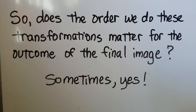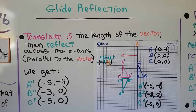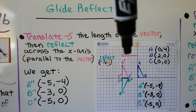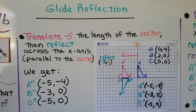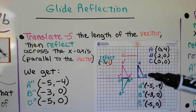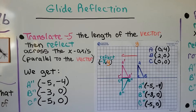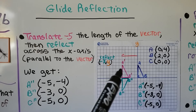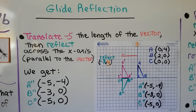The answer is sometimes yes. For our glide reflection, we're going to translate negative 5 — the length of the vector — and then reflect across the x-axis, which is parallel to the vector. We start in quadrant 1 with our little blue triangle. We translate it negative 5, the length of the vector, to the pink one. That's the translation. Then we reflect it to get the green one in quadrant 3. We get the ordered pairs for A double prime, B double prime, and C double prime.